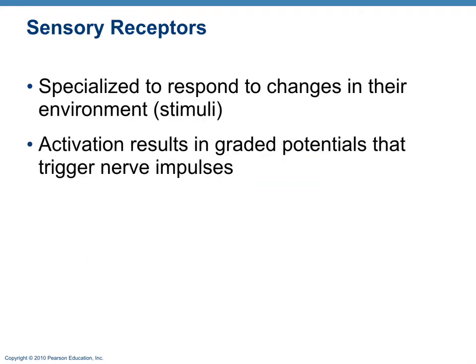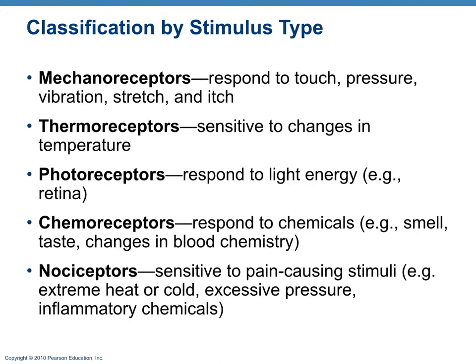Sensory receptors are specialized to respond to changes in their environment — to stimuli. When you activate sensory receptors, it results in graded potentials, and those graded potentials could trigger nerve impulses, which is the action potential in a nerve. We have different classifications of receptors based on stimulus type.